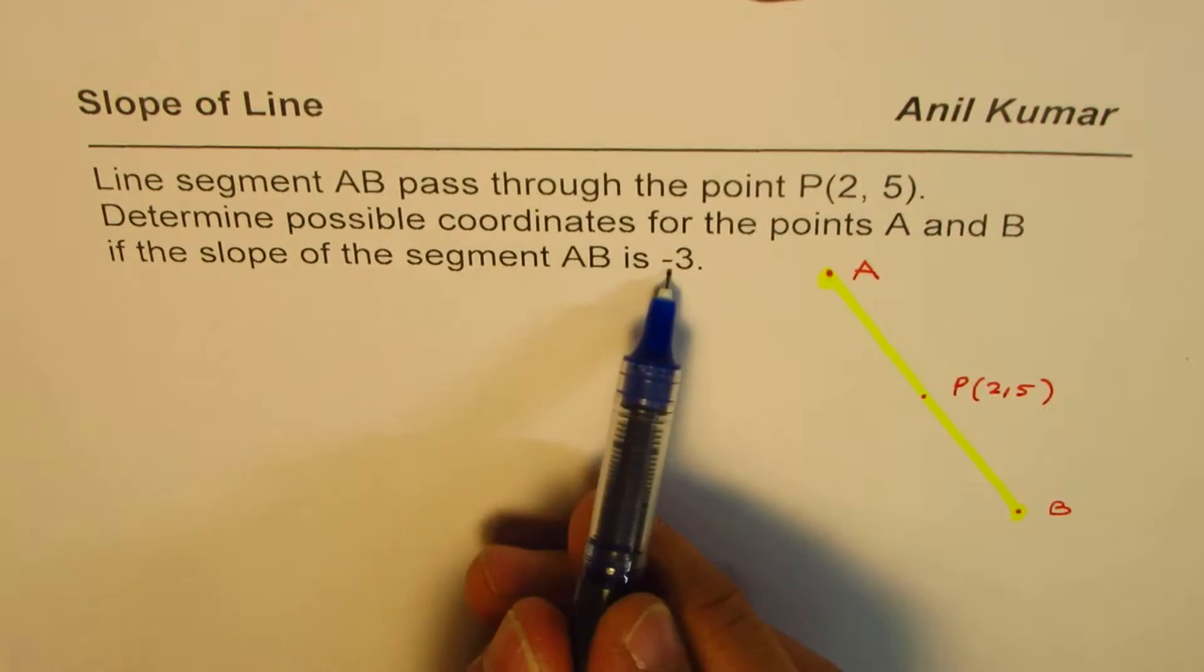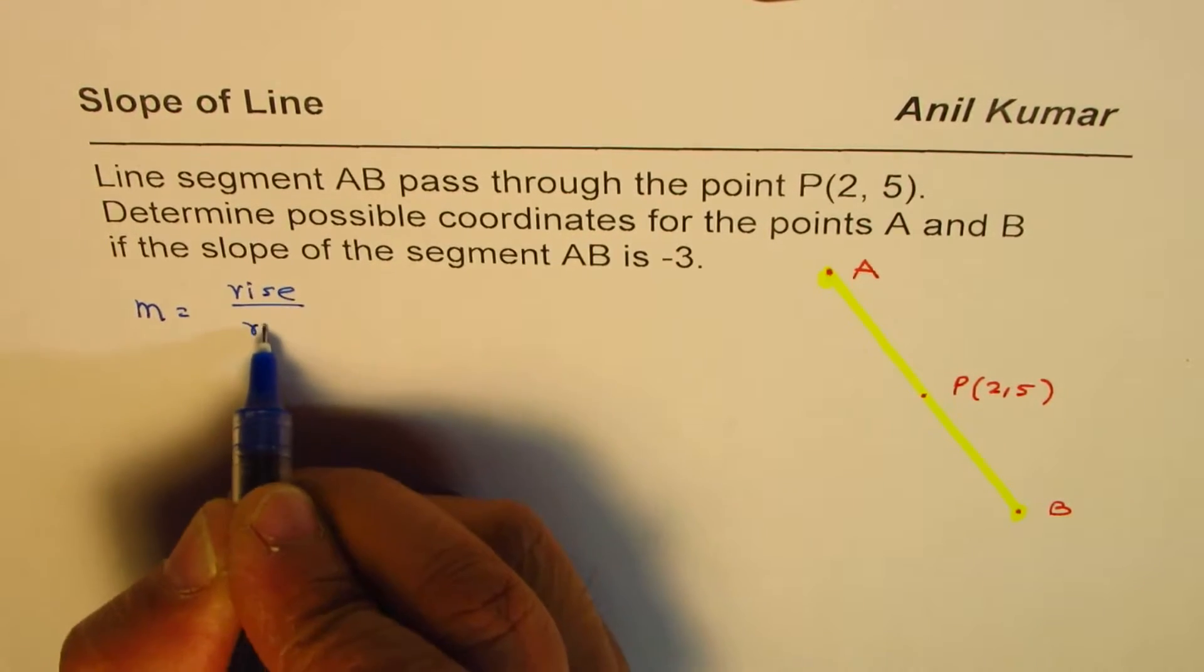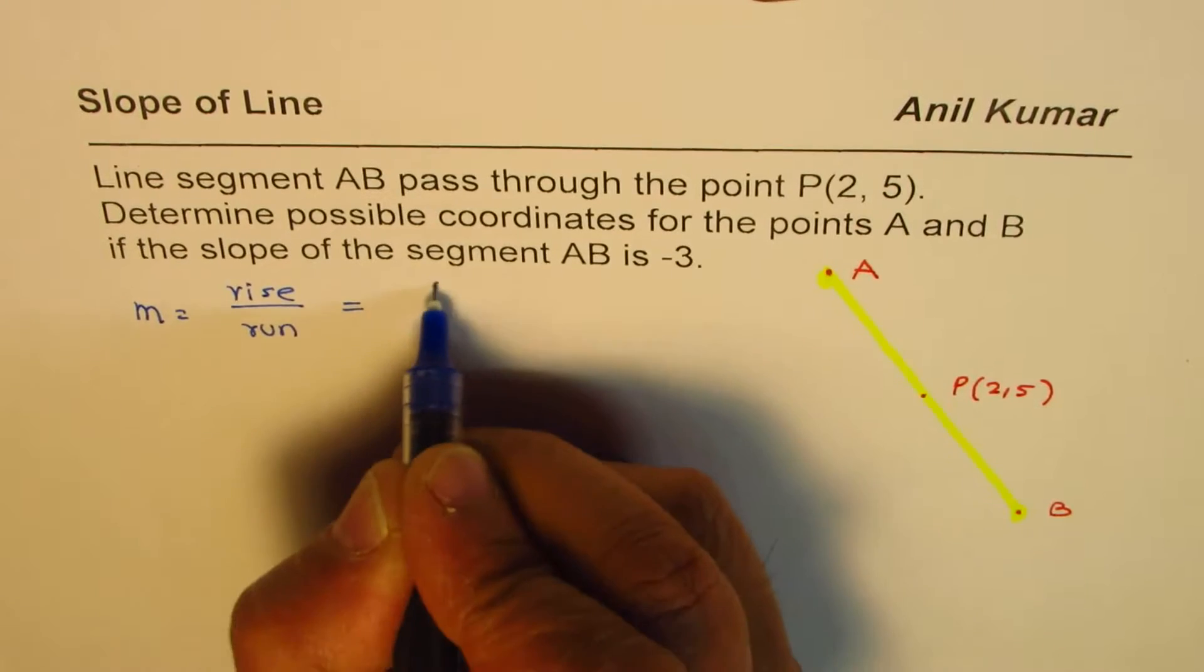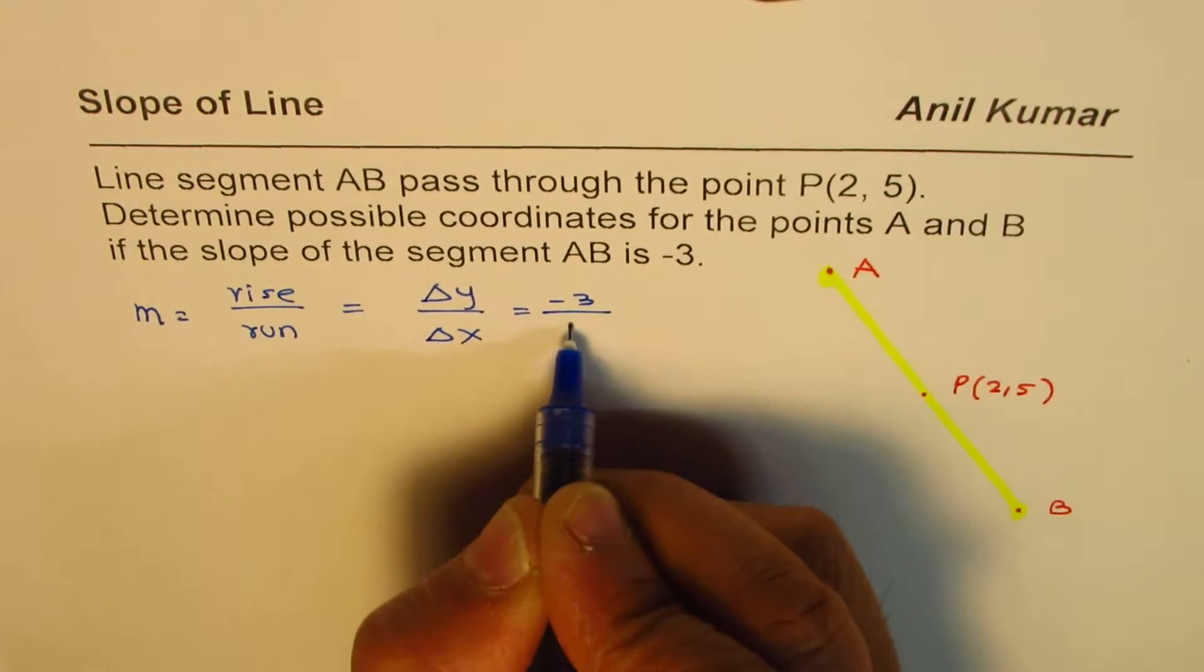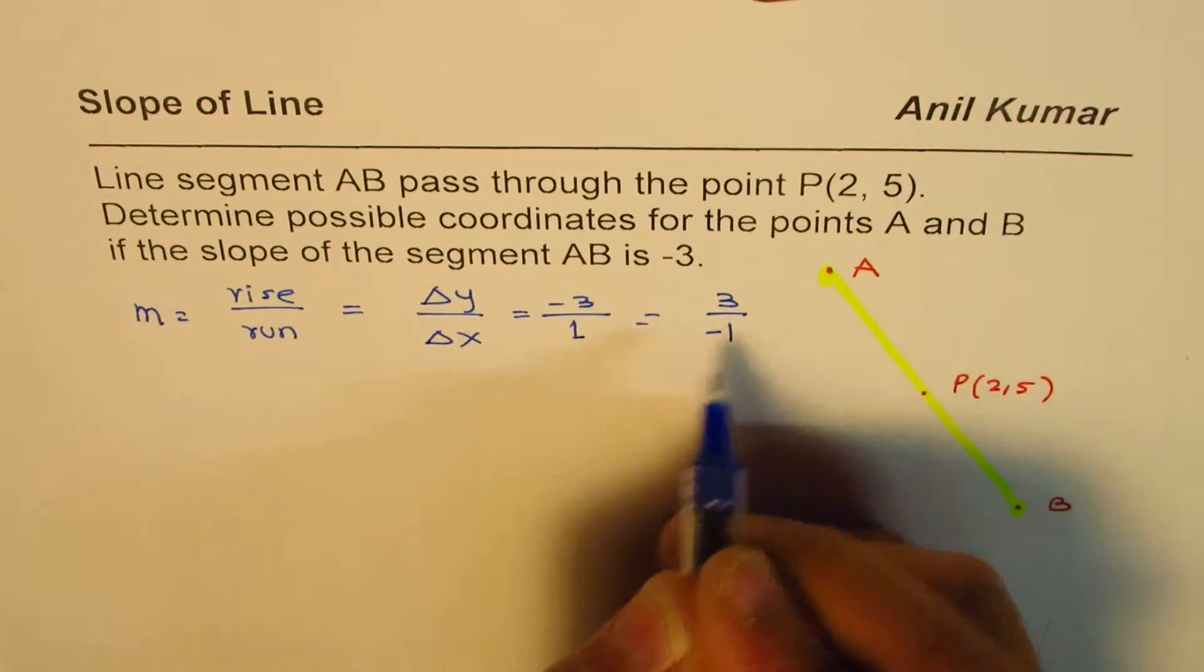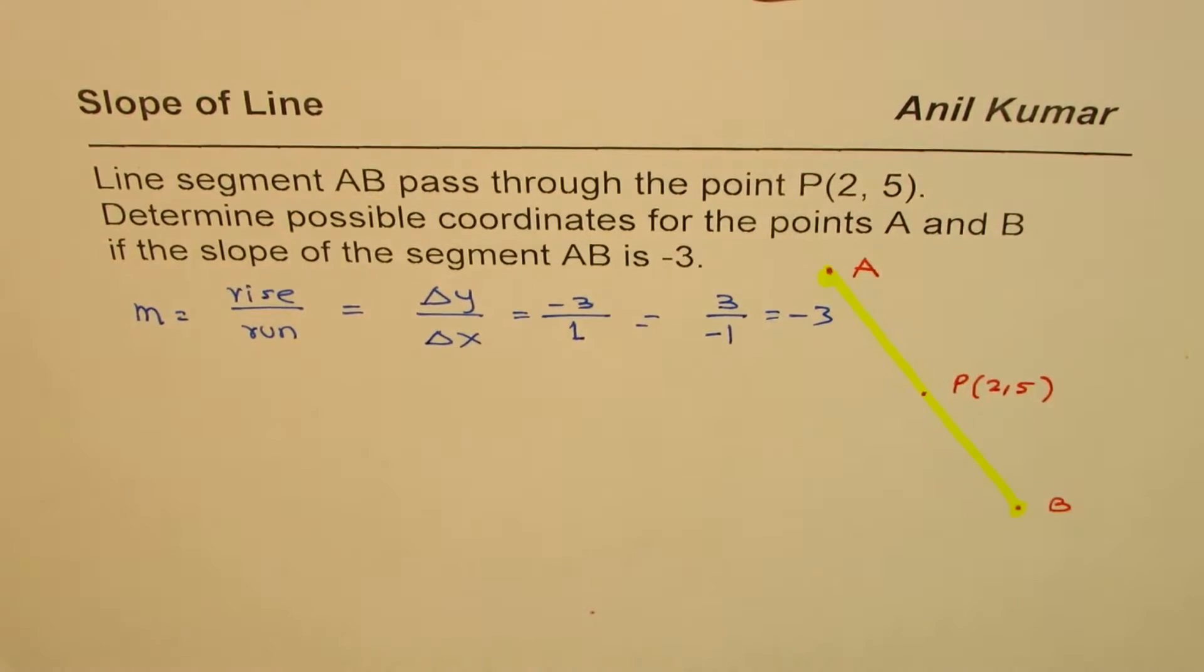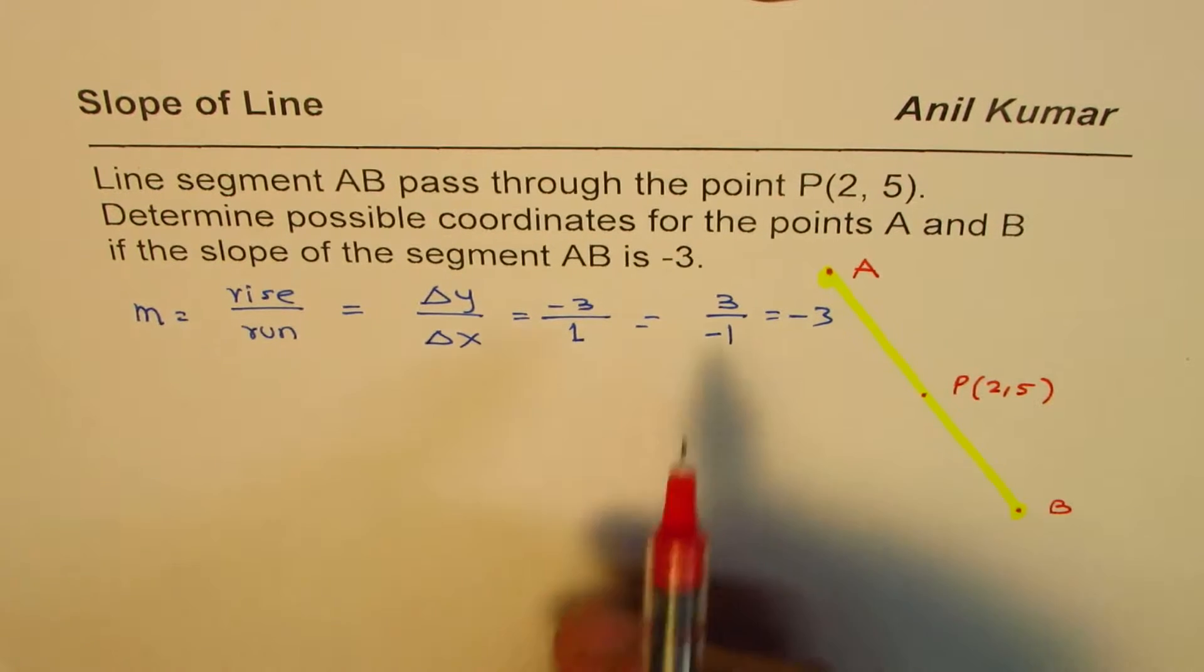Now, when I say that the slope is -3, that really means slope m, which is rise over run, which is Δy over Δx, is -3. I could write this as -3/1 and I could also write this as 3/-1. Both will give me -3 as my result. So that is how we could get two different points going with a line segment, going through point P and having a slope of -3.